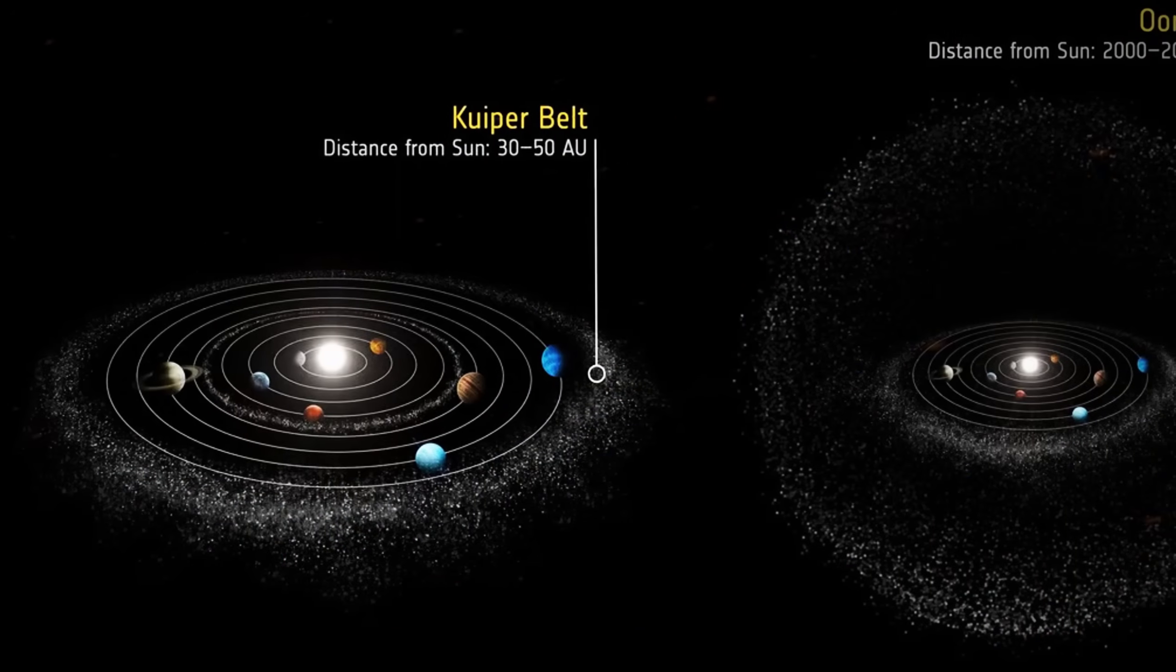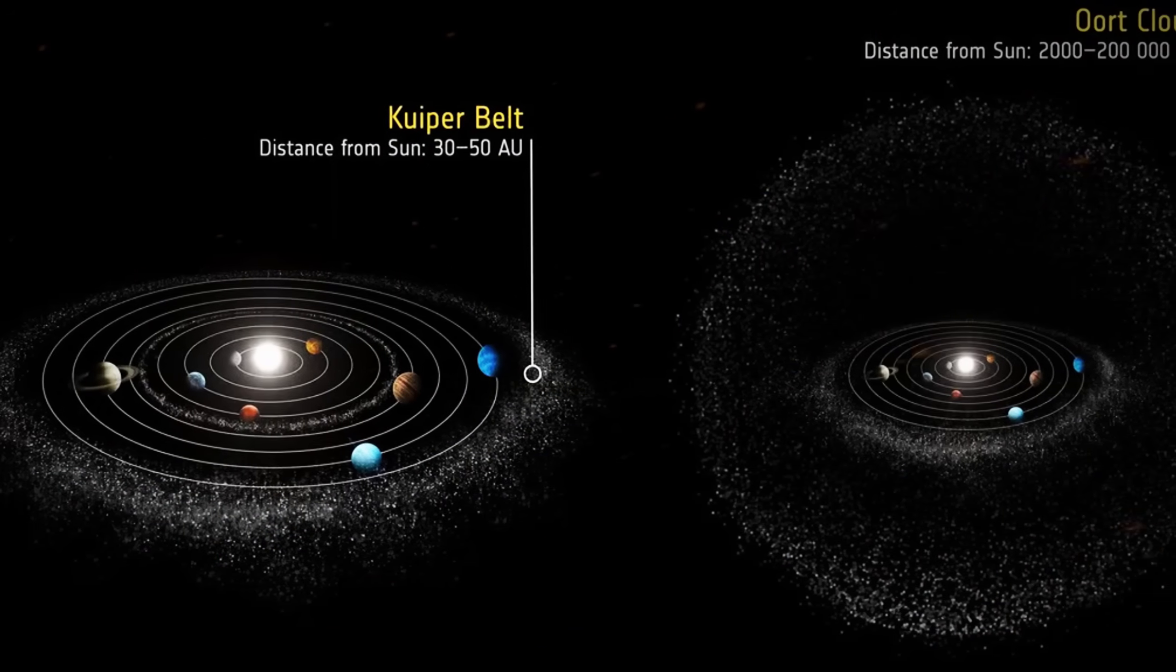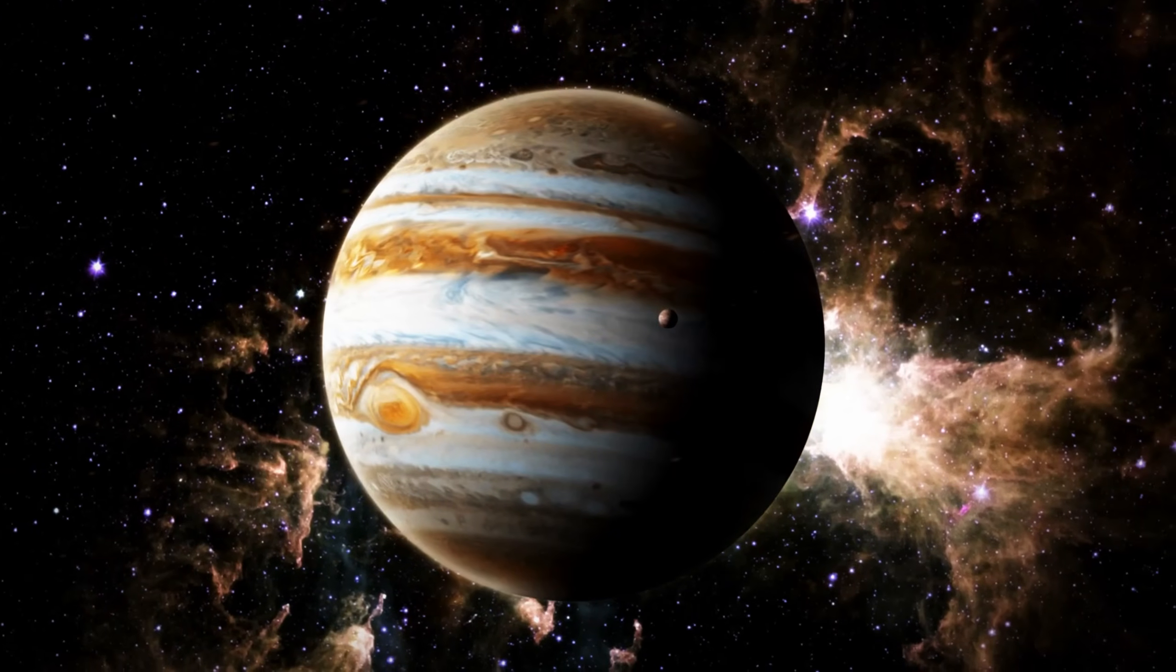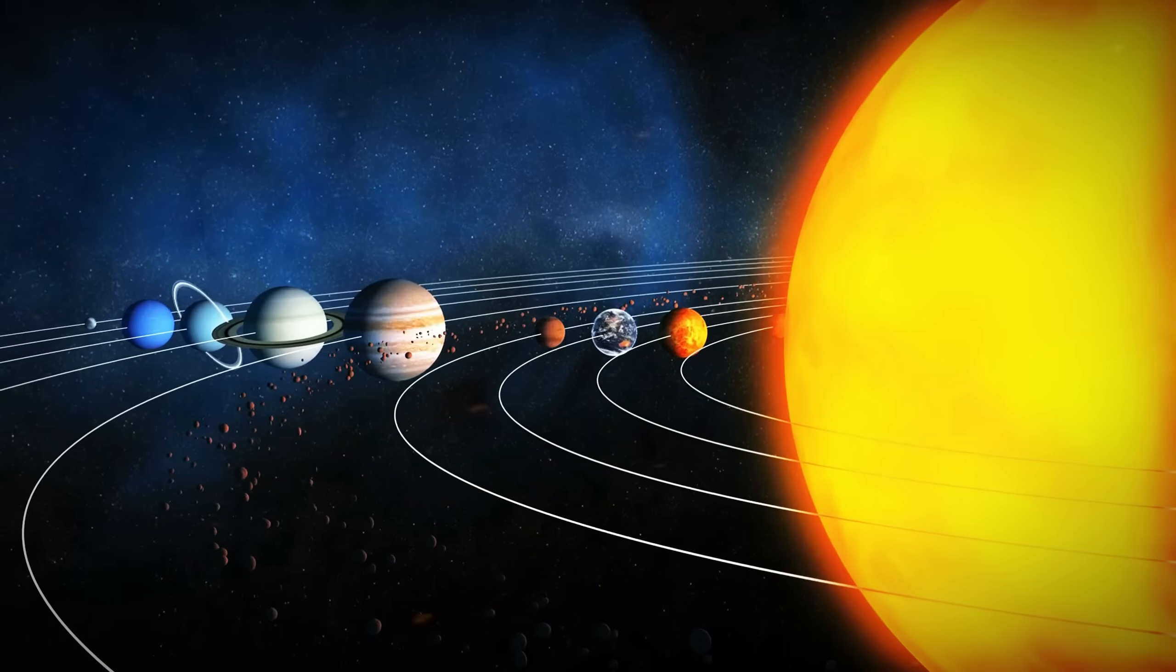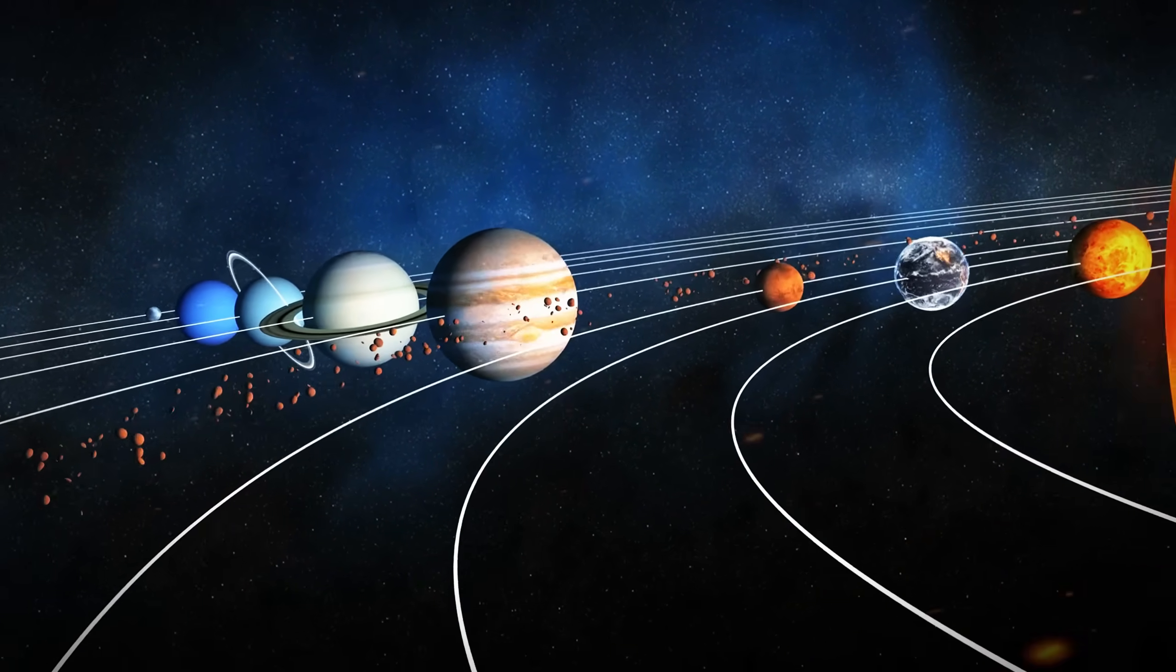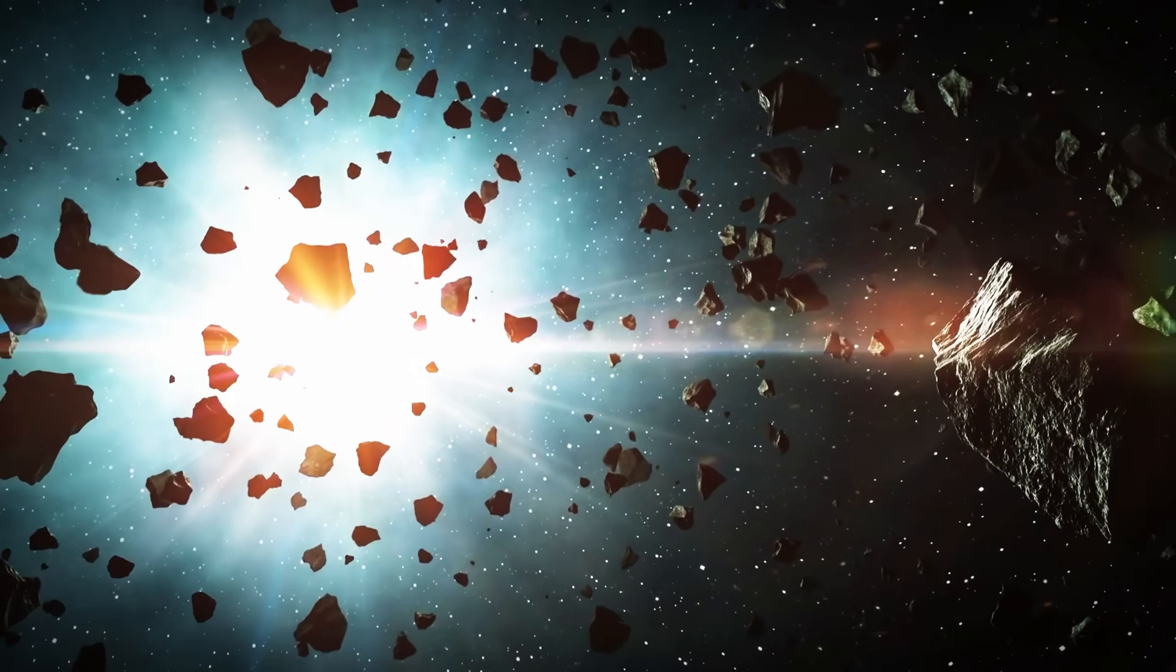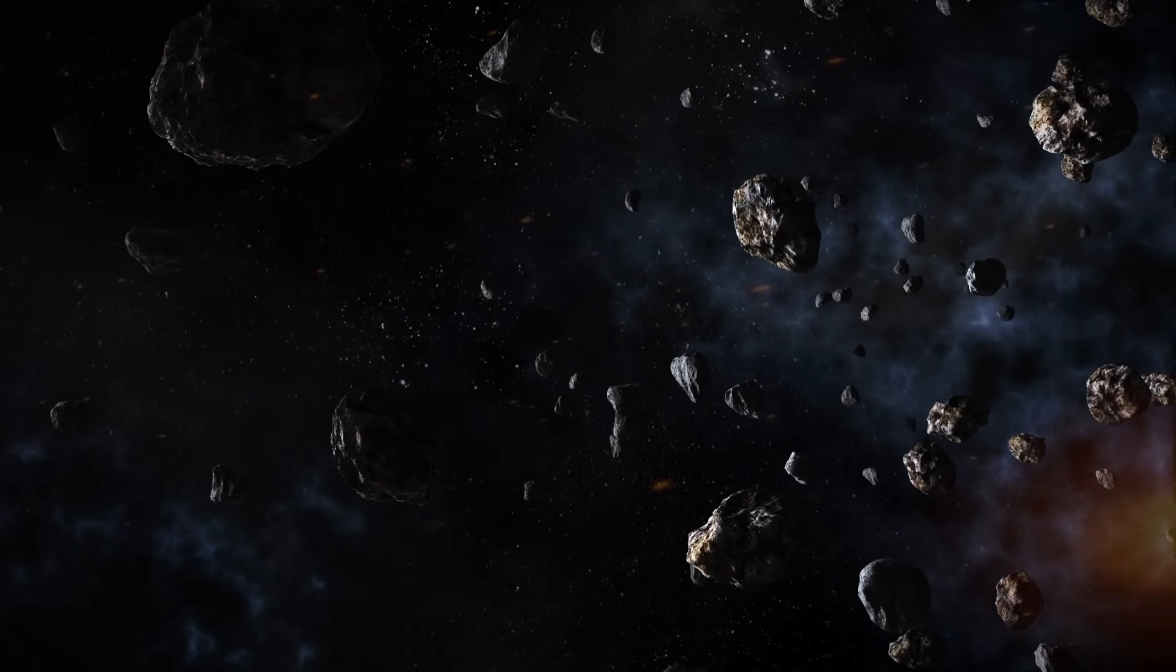Scientists are fascinated by the Kuiper Belt because it may hold remnants of the early solar system. What remains today is just a fraction of its original mass, as theorized in the NICE model. This model suggests that the orbits of the outer planets—Jupiter, Saturn, Uranus, and Neptune—underwent significant changes, which influenced the distribution of matter in the Kuiper Belt. The gravitational interactions of these giant planets likely scattered much of the Kuiper Belt's material, either ejecting it from the solar system or relocating it elsewhere.